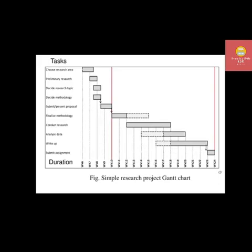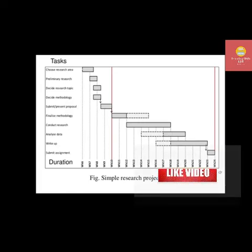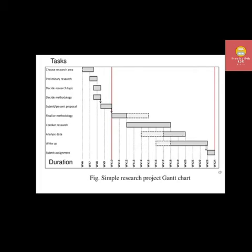Here is an example of a simple research project Gantt chart. There are a total of 24 weeks for the research, with various activities including: choose research area, preliminary research, decide research topic, decide methodology, submit research proposal, finalize methodology, conduct research, analyze data, write up, and submit assignment. The activities run from top to bottom, and in this Gantt chart we can clearly see the progress of the project.